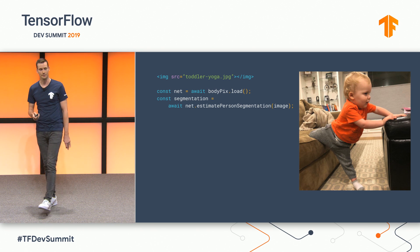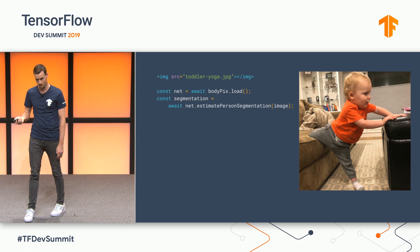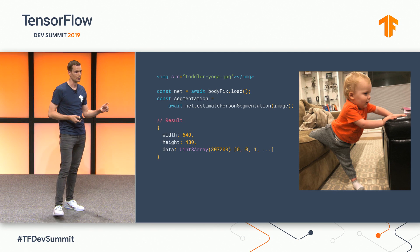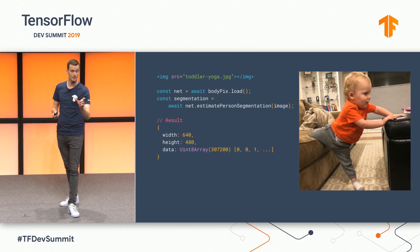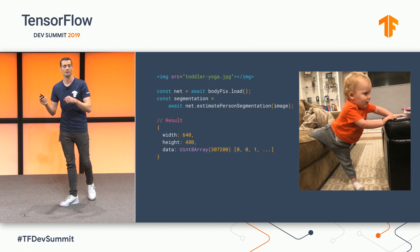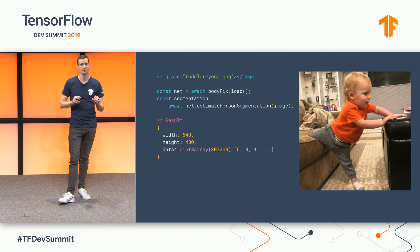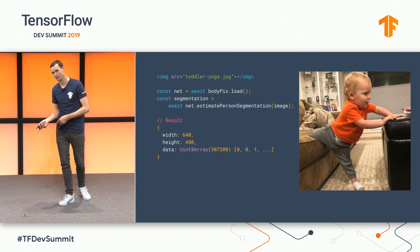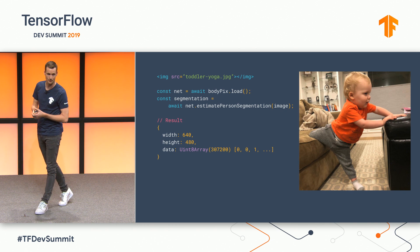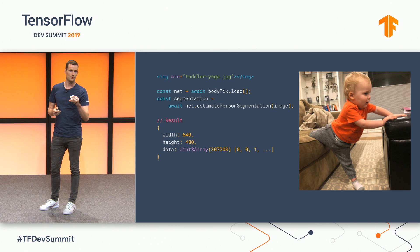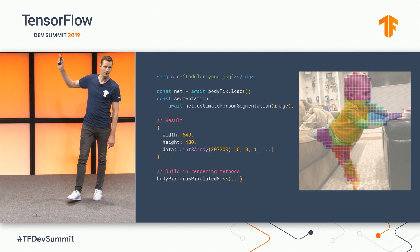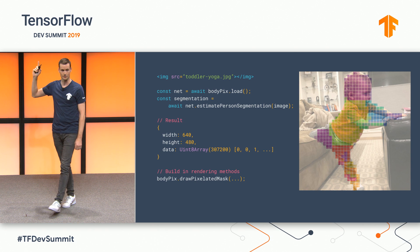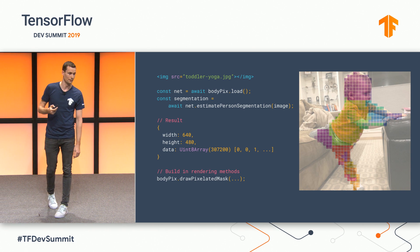The next step is to call one of the methods we expose, which is estimate person segmentation, and I can pass in a DOM element. This returns a JavaScript object with the width and height of the image and a value for every pixel — whether it's an arm, a leg, a head, et cetera. There are also a bunch of really easy-to-use methods for doing filtering on the image, so I can take the results and render it directly on the DOM, showing head, body, arm, and so on.